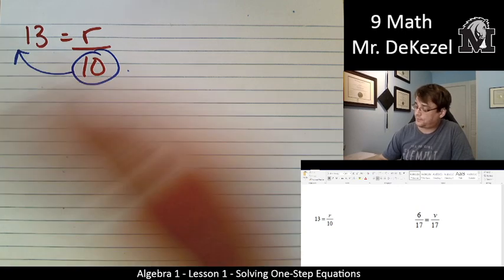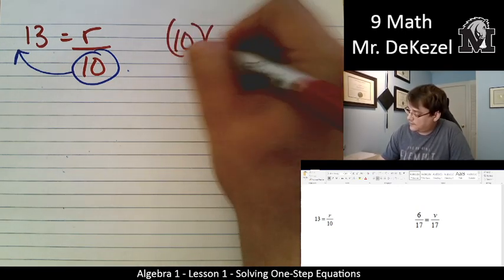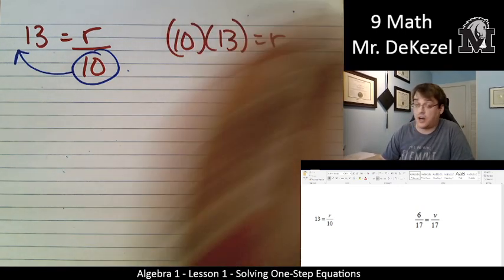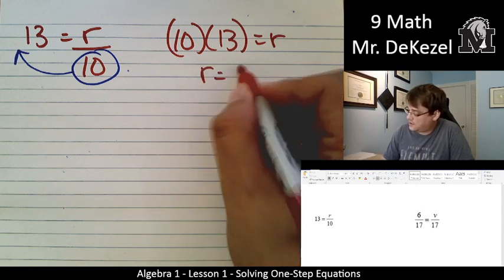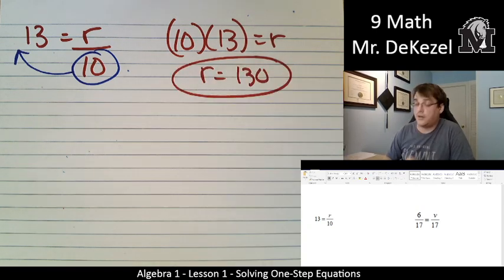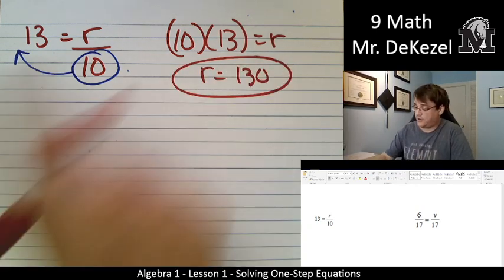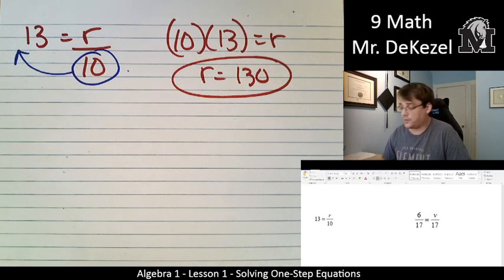So that is 10 times 13 equals r. r is equal to 130. And that makes sense. 130 divided by 10 does equal 13.